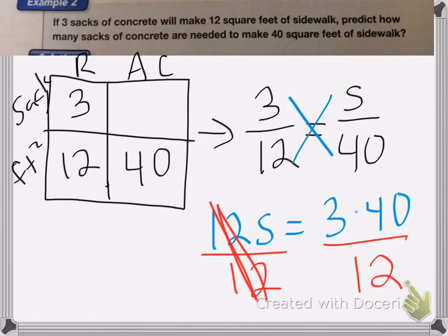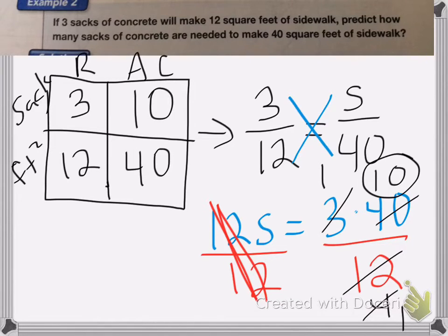Now I can reduce and simplify. I know that 12 and 3 I can simplify. 3 becomes a 1, 12 becomes a 4. Now I can do it again. The 4 and the 40 will simplify. 4 becomes a 1, 40 becomes a 10. So that means I will need just 10 sacks to make 40 square feet of sidewalk.